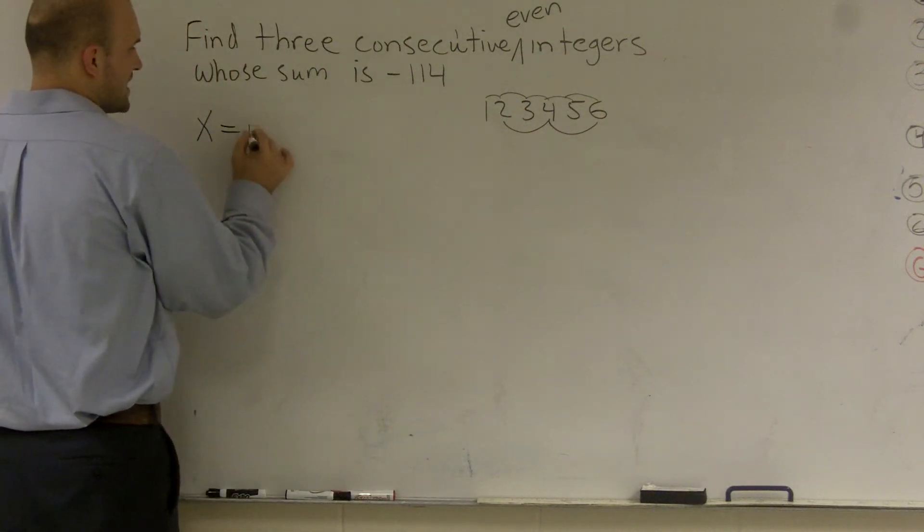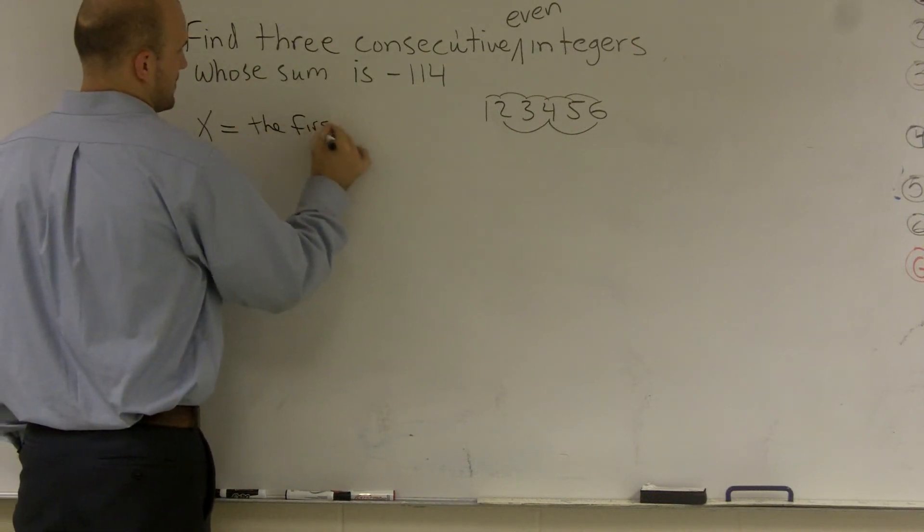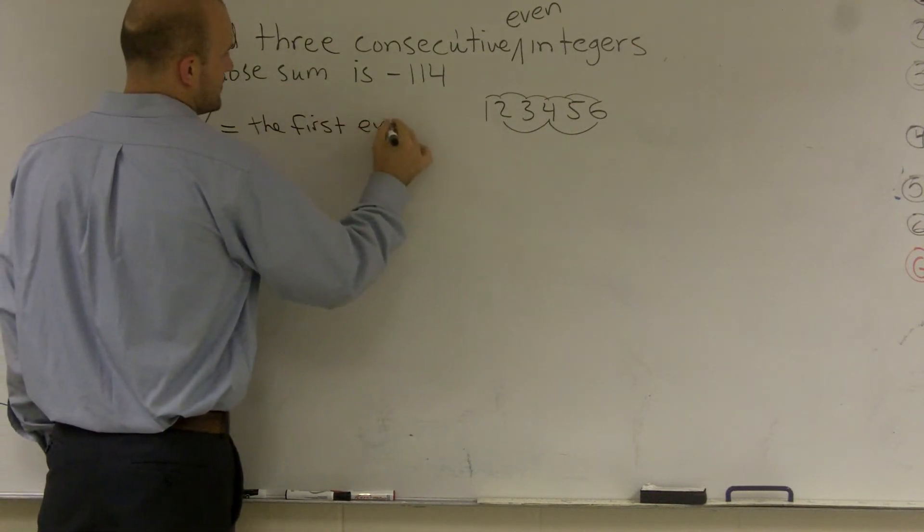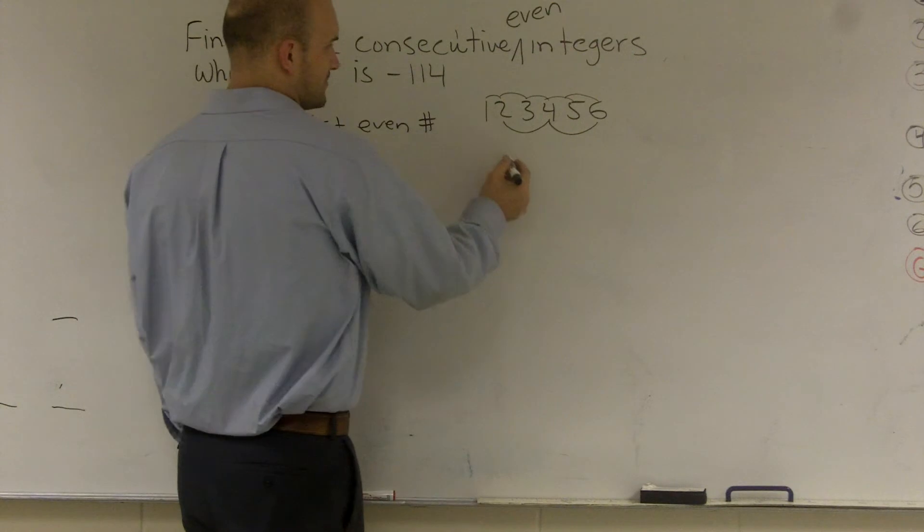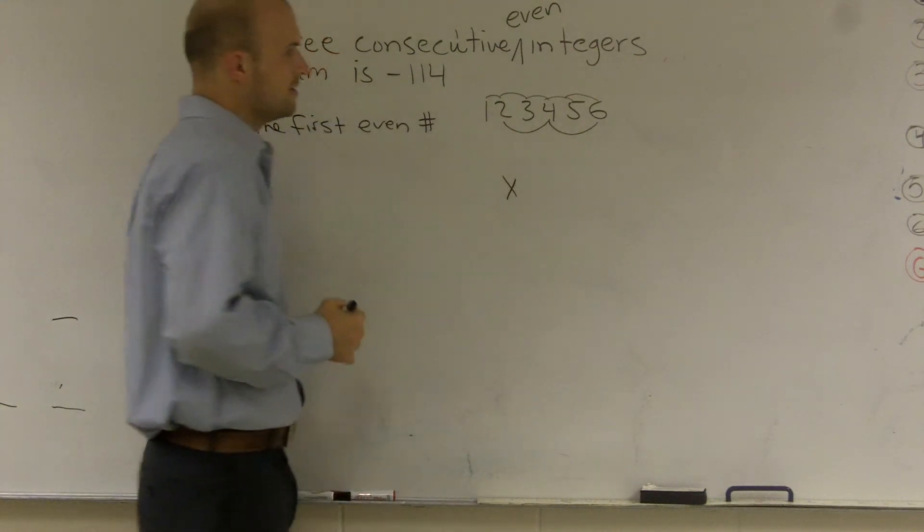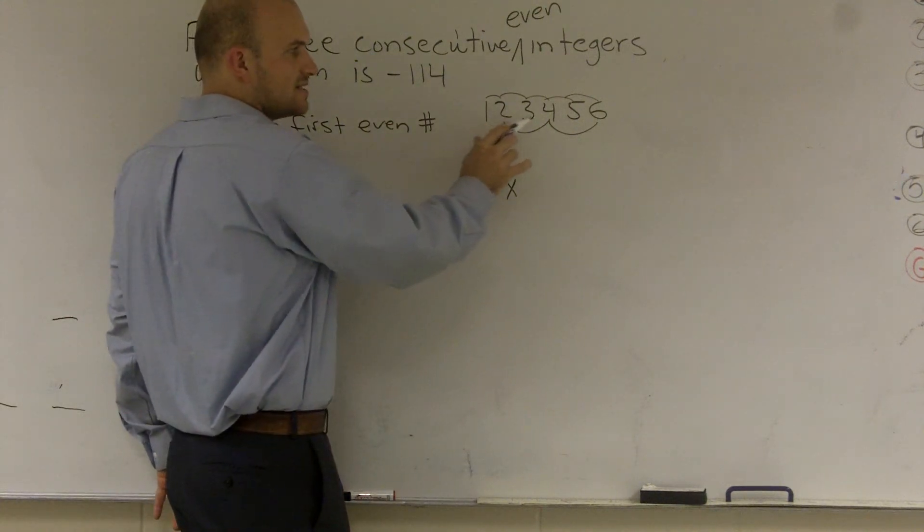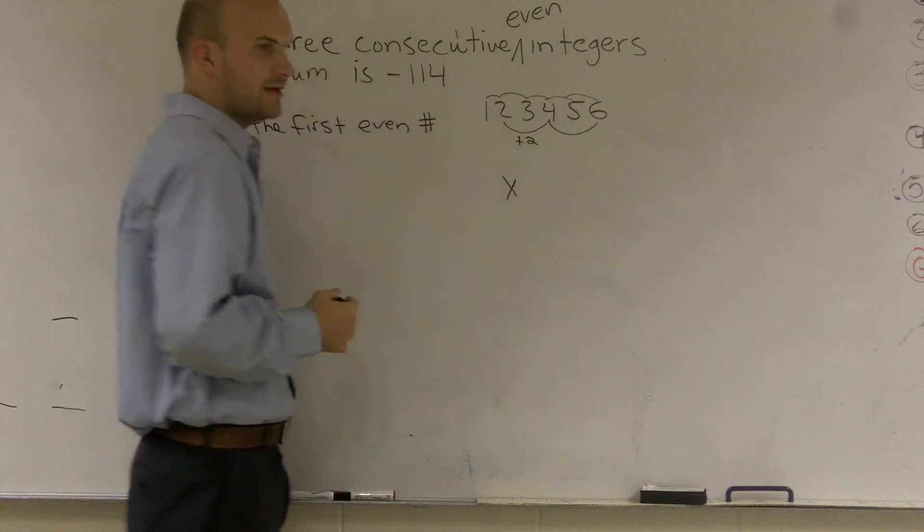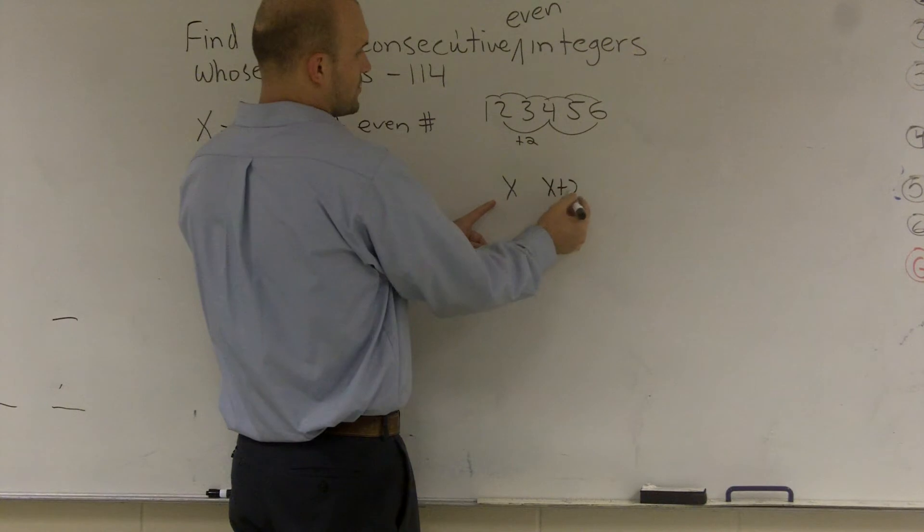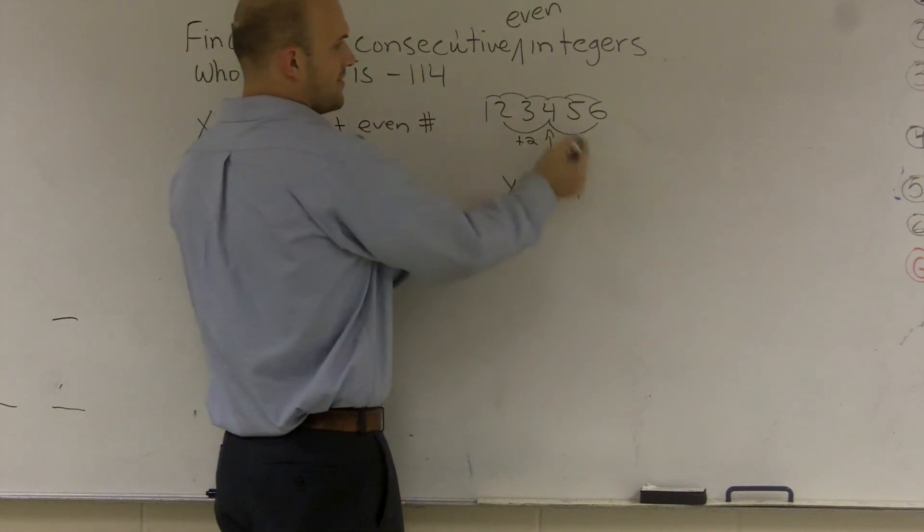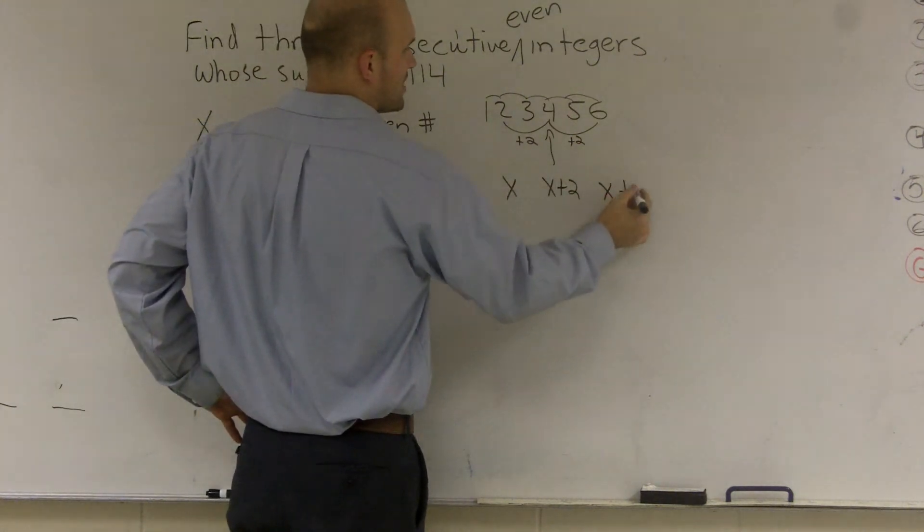Let's have x represent x equals the first even number. So let's say x equals the first even number. So let's just say it's x. Well, if you guys understand what consecutive numbers are, to go from my first number, let's say my first number here is 2, to get to my next number, I have 2 plus 2. Right? So if my first number is x, my next number would be x plus 2. Right? That would be 4. And then I have to add 2 again to get to 6. So then my third number would be x plus 4.